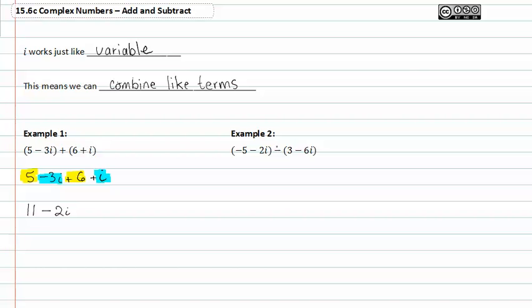In example two, we have a negative sign in between. Because of the negative, we must distribute it before we go any further.